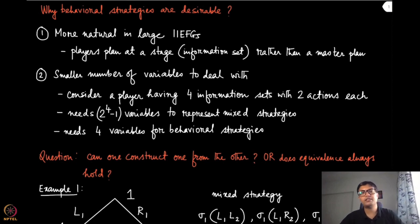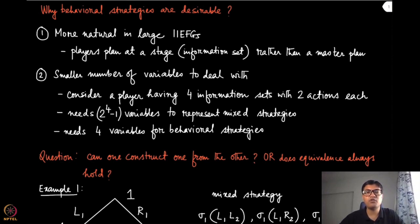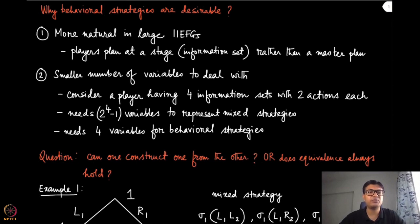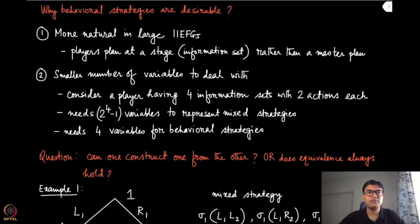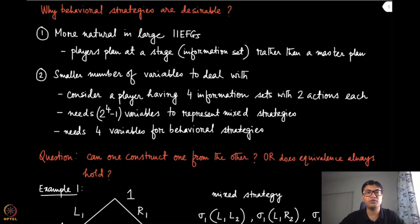From a computational viewpoint, it's also a smaller number of variables to deal with. For example, pick a player who has four information sets and in each information set has two actions. To describe the mixed strategies, you will need 2^4 minus one variables, because you first list all possible strategy profiles — which will be 2^4 — and since they all sum to one, the number of independent variables is 2^4 minus one. This number increases exponentially as you have more information sets. For behavioral strategies, you only need four variables, because at every round you toss a coin and take the action accordingly. So both from the cognitive limits of the players and from the viewpoint of computation, behavioral strategy is more desirable.